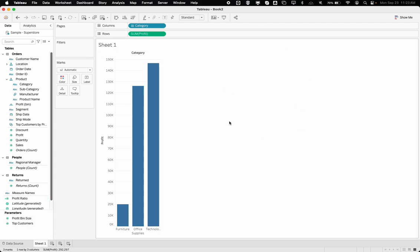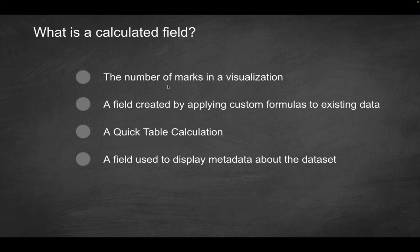So what that's telling you is within this visualization you have three marks and then it goes into specifics in terms of one row by three columns. But is this number, the three marks, is that a calculated field? The answer is no, that's not an example of what a calculated field is. So that can't be the correct solution.